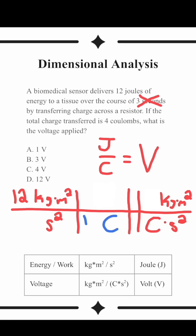So all we have to do is 12 joules divided by 4 coulombs and get our final answer of 3 volts. And that is the correct answer.